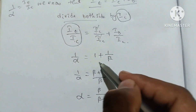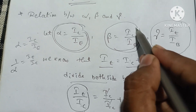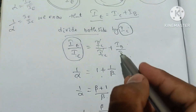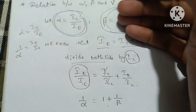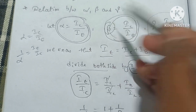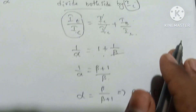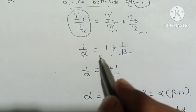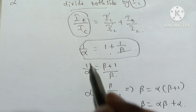So 1 by alpha is equal to 1 plus something. Beta is equal to IC by IB, but we need IB by IC, which is its reciprocal — 1 by beta. Therefore, 1 by alpha is equal to 1 plus 1 by beta.